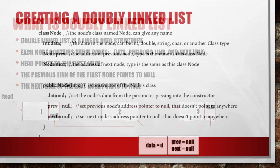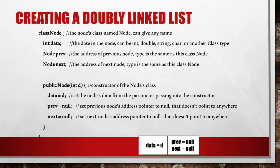Now I will show you how to create a node in a doubly linked list. The node class is named Node, which can be given any name. Int data is the data in the node. In this case, I'm making a linked list with the integer data type, but when you make your own list, you can choose int, double, string, char, or any other data type.